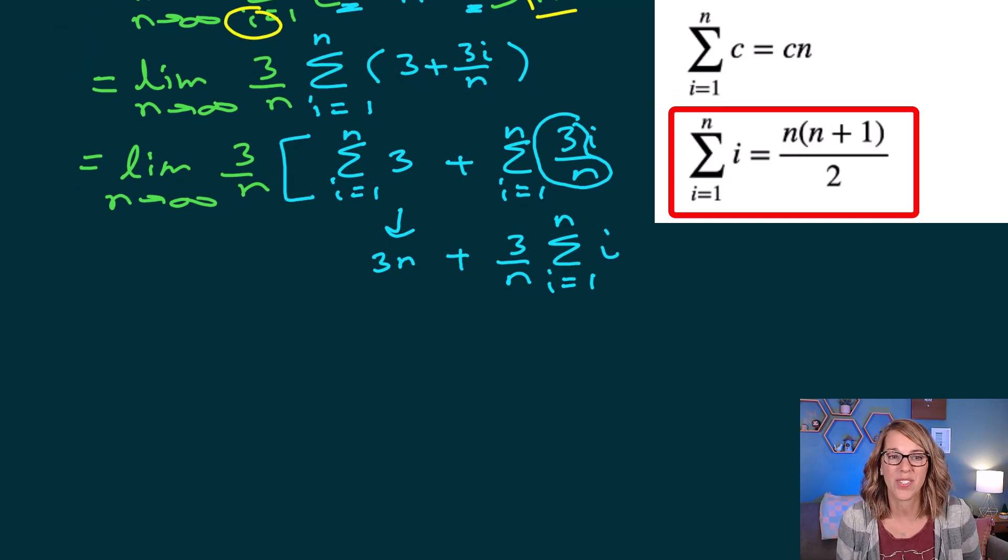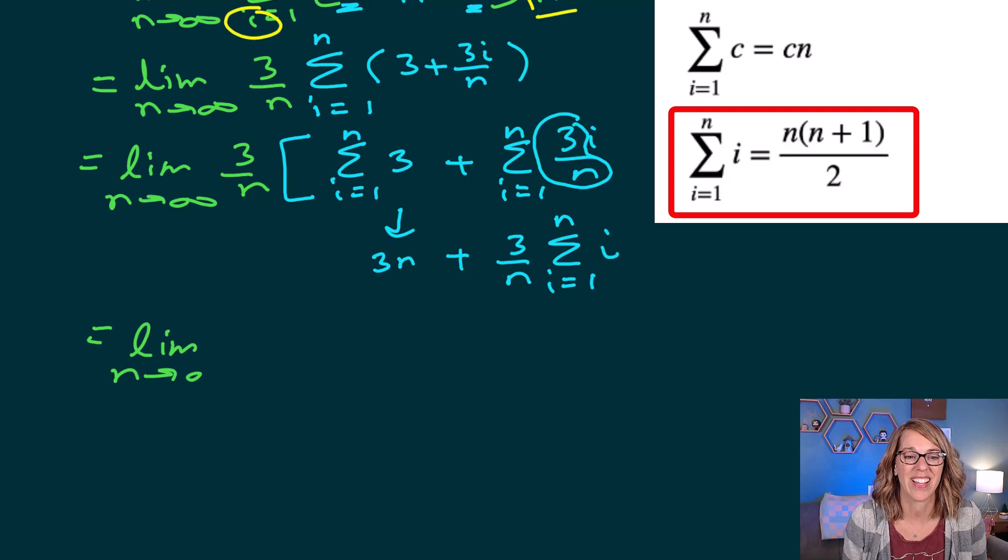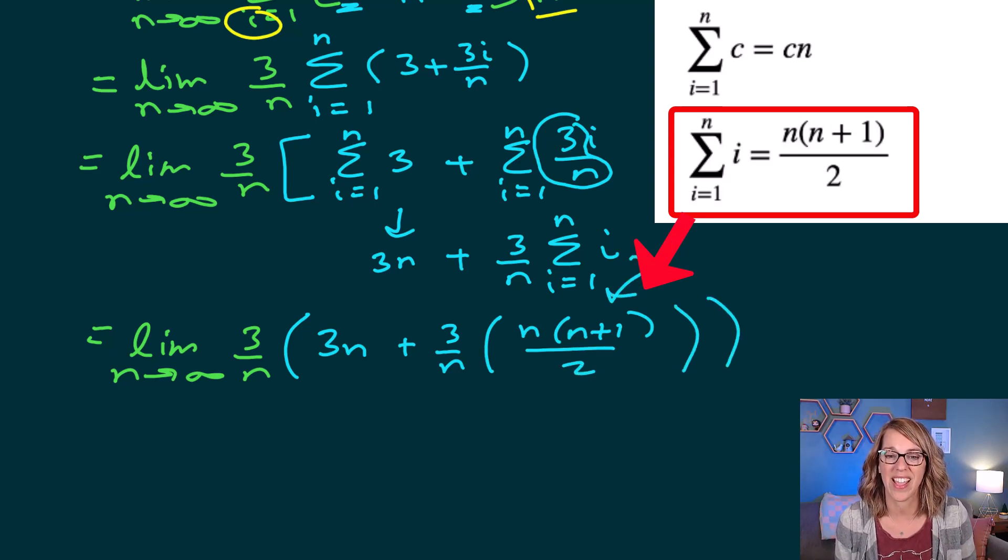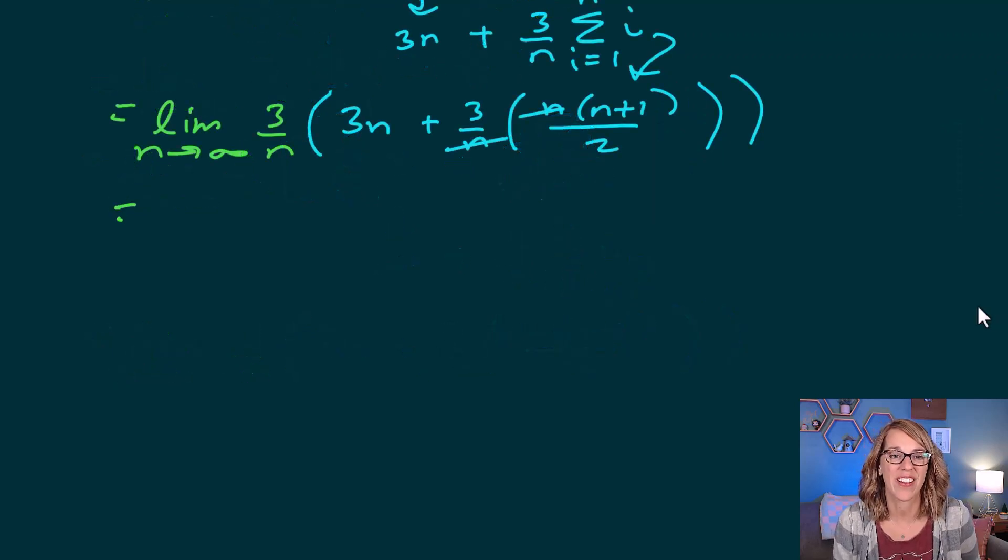So this is equal to the limit n goes to infinity. I still have the 3 over n out in front. I've got the 3n. Plus 3 over n. I'm going to write that formula n times n plus 1, all divided by 2 to replace the sum of i. So I've got an n here that I can cancel, and I'm just about ready to take that limit.